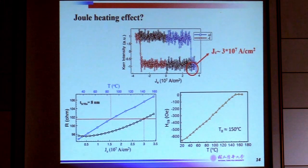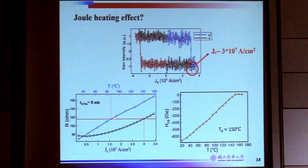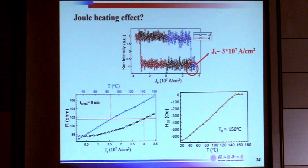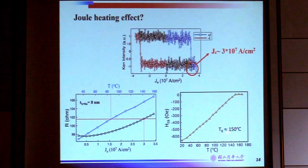We also verified whether we really have a temperature rise. We measure the temperature dependence of resistance, obtaining a quite good linear relationship. Then we deliberately apply a long pulse measurement and pick the resistance data at the end of the pulse. Plotting resistance against current pulse strength, we estimate the temperature rise is around 85°C. That is a significant amount, but compared to the blocking temperature of IrMn, it is much smaller. So the temperature rise itself cannot really reach the blocking temperature to reverse the exchange bias.